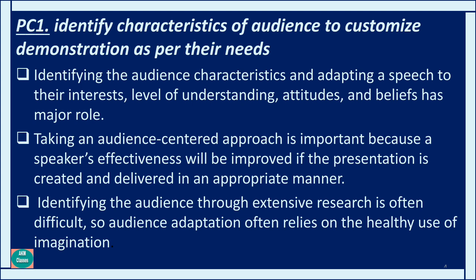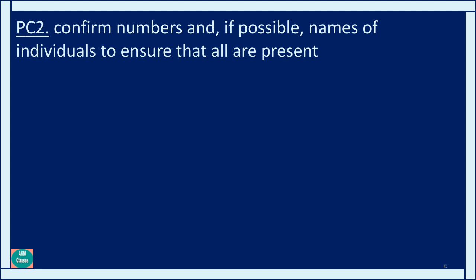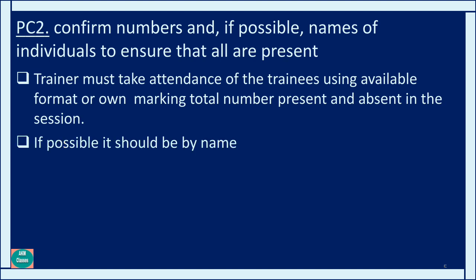PC2 is confirm number and if possible name of the individual to ensure that all are present. Whenever we go to give a demonstration or conduct training, we first need to confirm how many participants were supposed to be available and how many are actually present. If there is a slight shortfall, we can wait a minute or two so that our lecture or session is not missed by anyone, and the learning outcomes are properly achieved by all. For this, if the number is confirmed, you can mark attendance — present or absent — and if possible, take attendance by name.